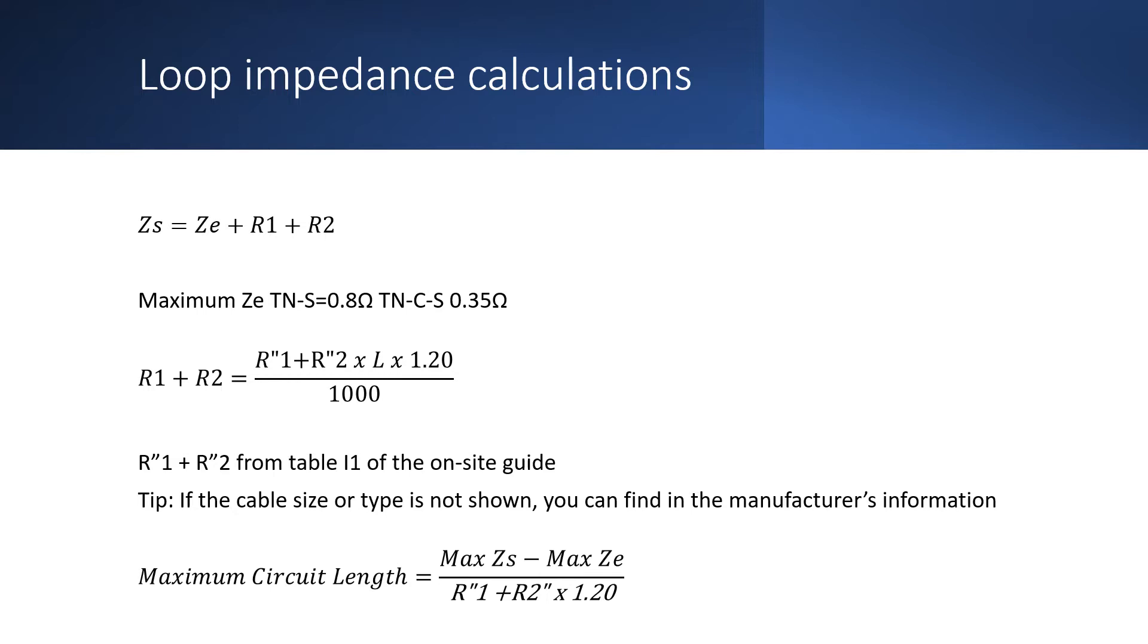When we are calculating the maximum length of a circuit it makes sense to use the maximum values for ZE. So 0.8 for a TNS system or 0.35 for a TNCS system. Even if we can measure the exact ZE, by using the maximum it will help us to ensure that the installation remains compliant over its lifetime.